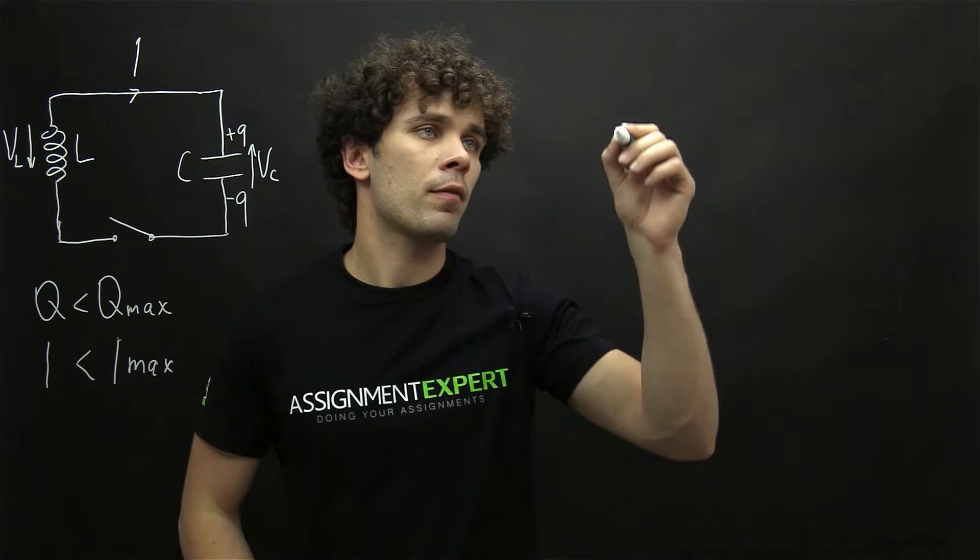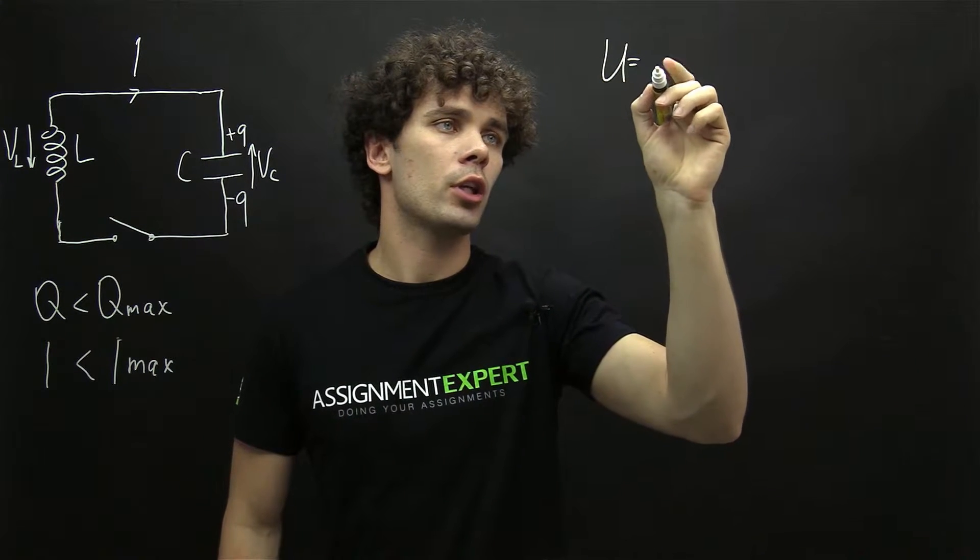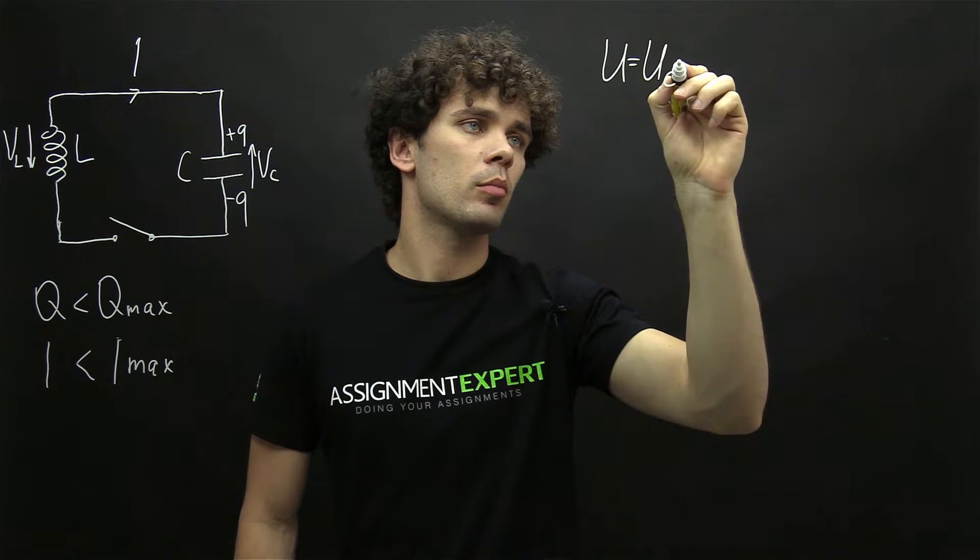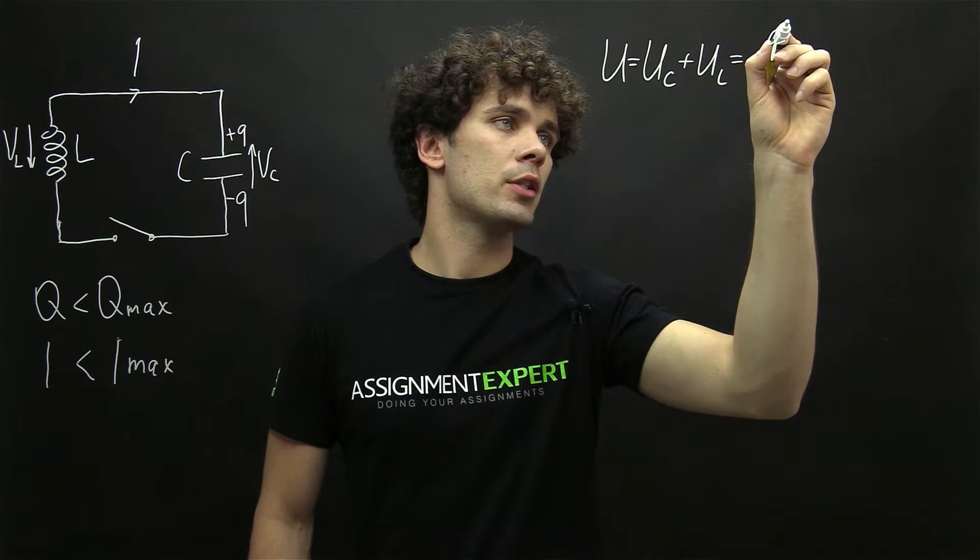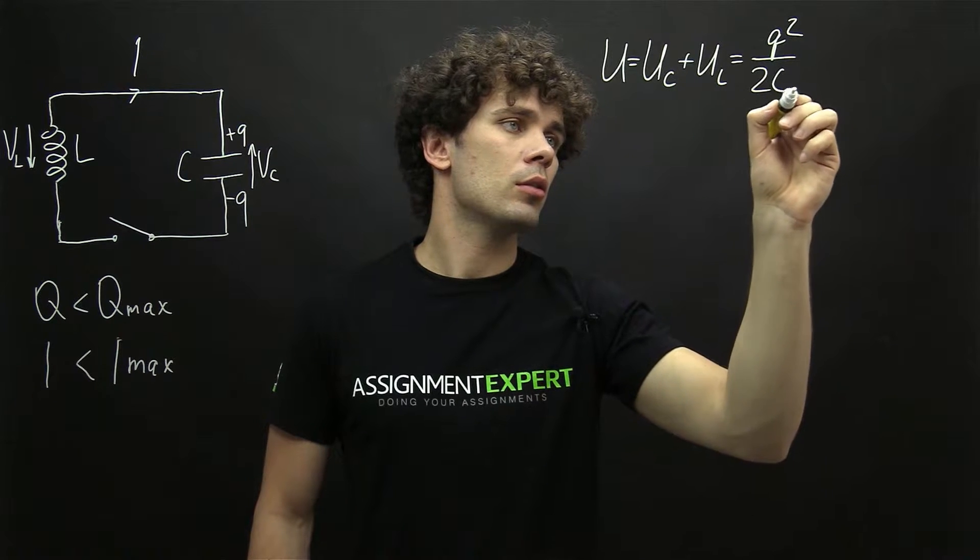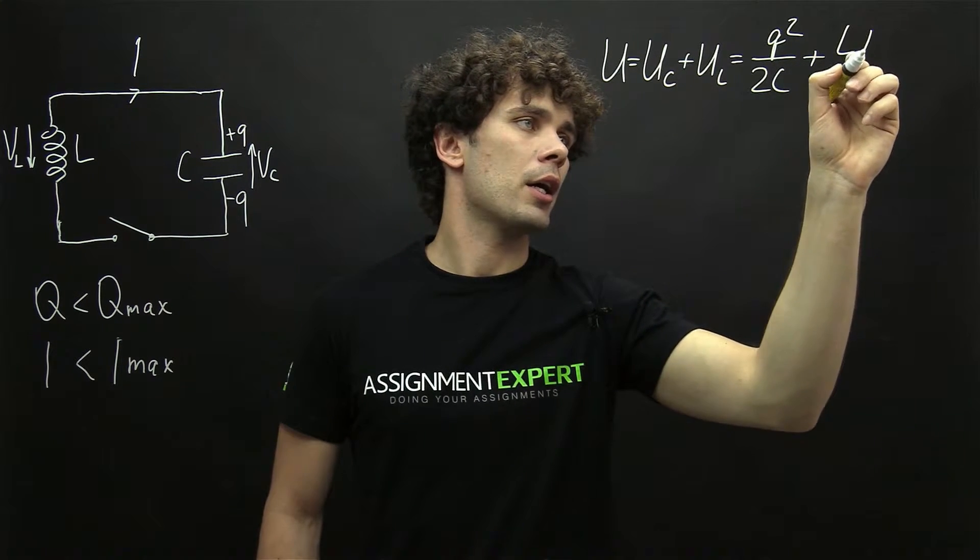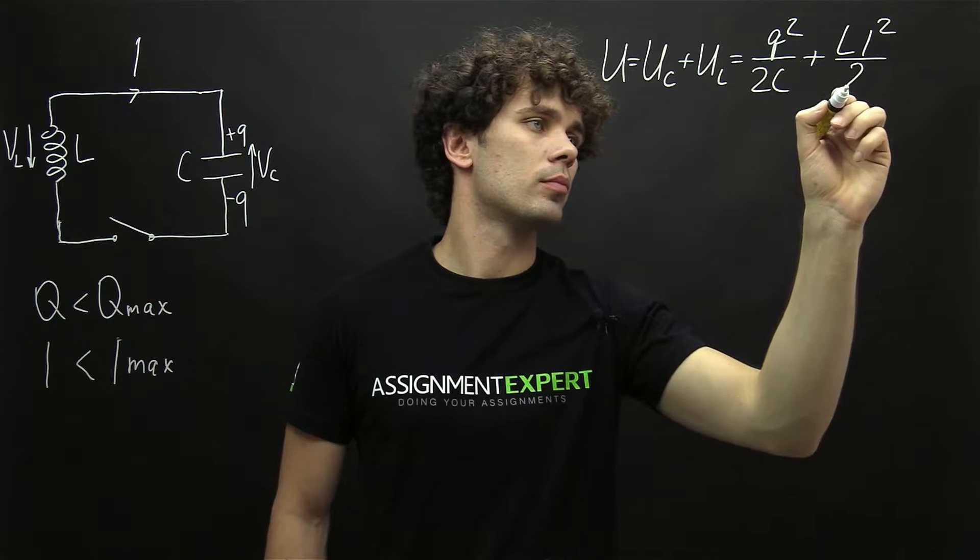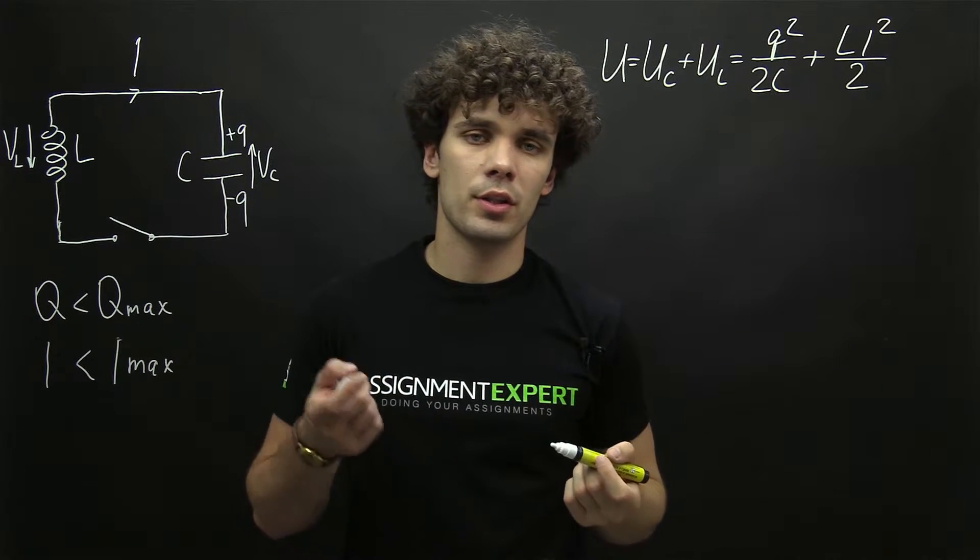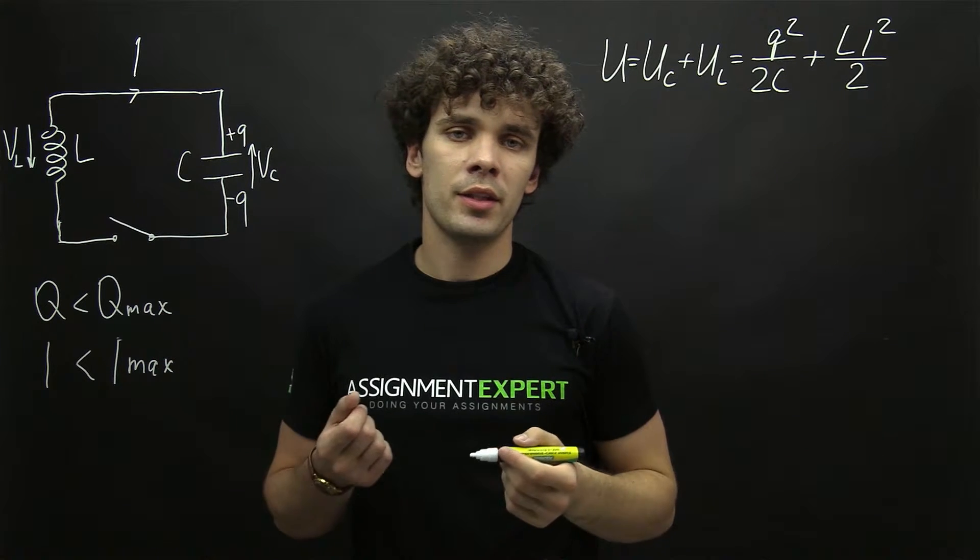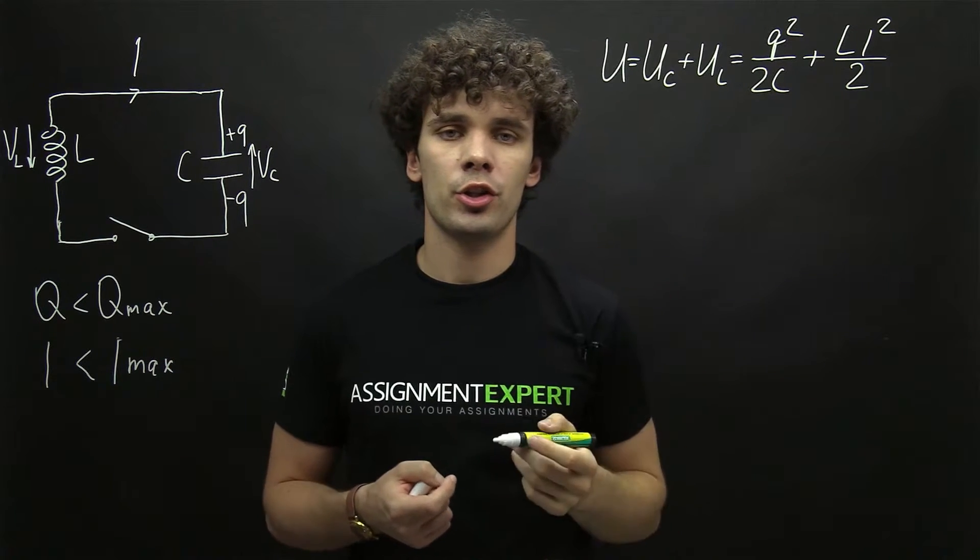So we have the total energy U equal to UC plus UL and equals Q squared over 2C plus Li squared over 2. Now here we assume that there is no resistance in the LC circuit. This means that the total energy is a constant.